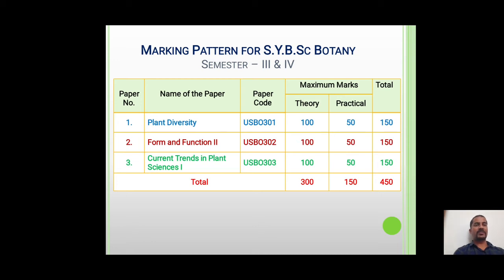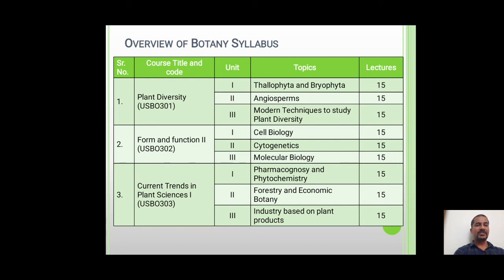In total, the SYBSC Botany subject carries 300 marks for the theory and 150 marks for a single practical paper, making the total marks for the Botany subject in SYBSC 450. A similar pattern applies for other subjects such as Chemistry, and the remaining 100 marks will be there for the FC.